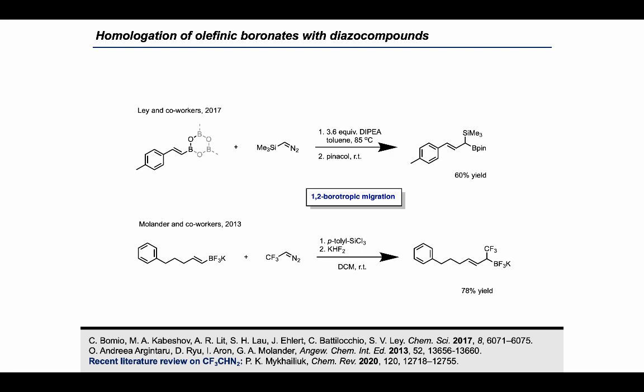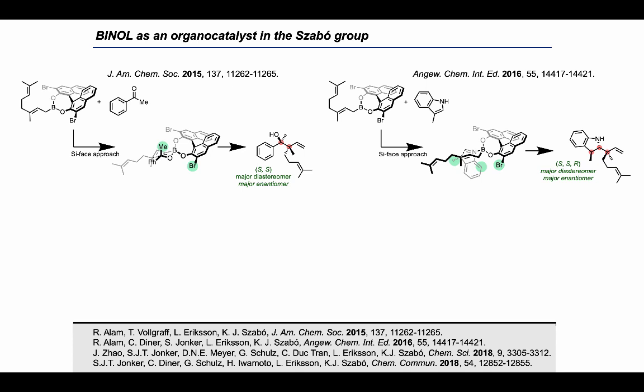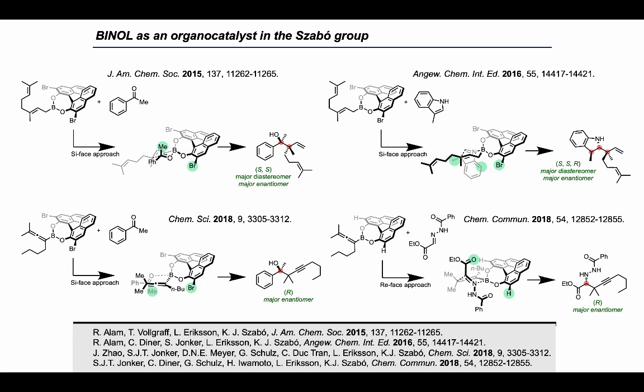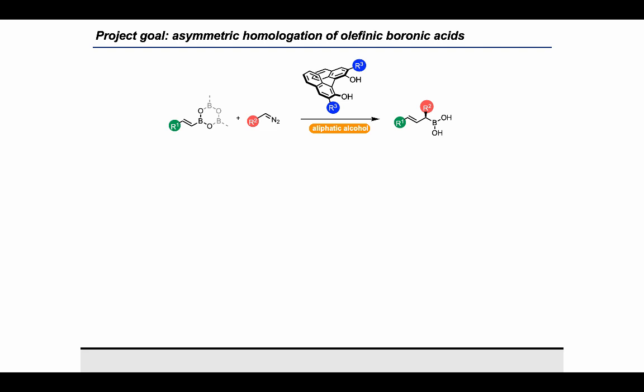In the SABO group, we have some prior experience using binol as an organocatalyst for enantioselective reactions of organoboronic acids. These are the asymmetric alluberations of ketones, cyclic imines and indoles, as well as the asymmetric propargalaborations of ketones and hydrazono esters. The common element in all these reactions is the binol organocatalyst used in combination with a free boronic acid. The goal for this project is to apply experience from our previous binol-catalyzed transformations to the homologation of boronic acids via a 1,2-borotropic migration with a diazo compound.